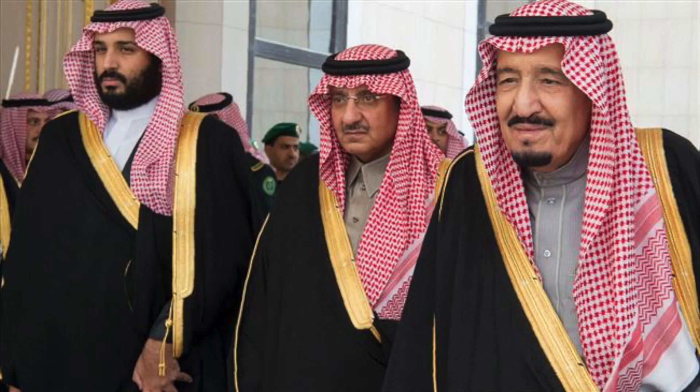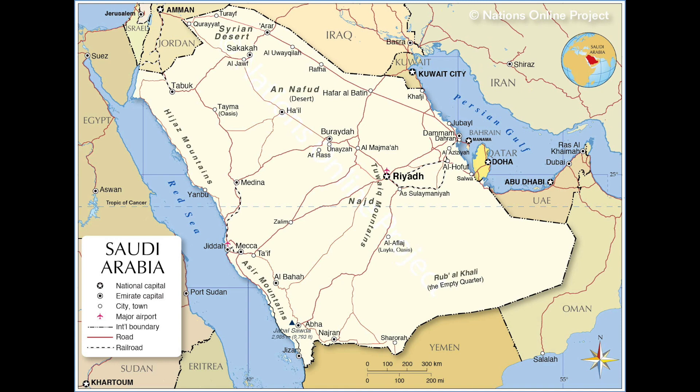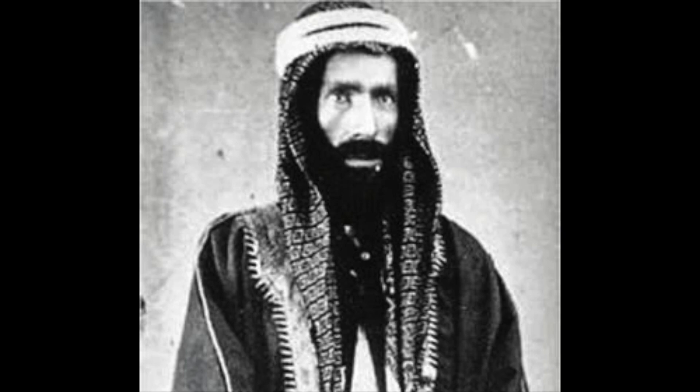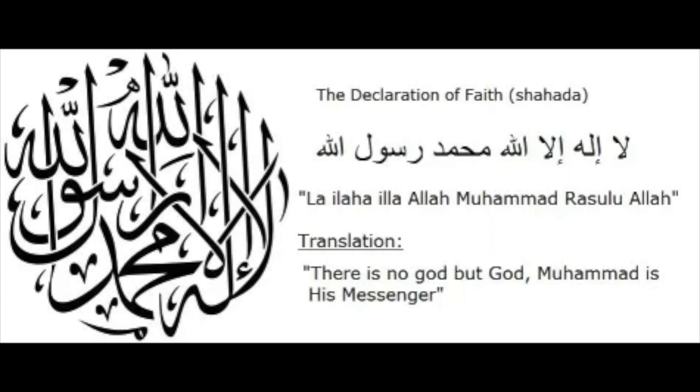The Al Saud family, which would go on to found the Kingdom of Saudi Arabia and still rules it today, have long been adherents to the ideology of Wahhabism. Wahhabism is a highly traditionalist and fundamentalist interpretation of Islam, founded by Muhammad ibn Abd al-Wahhab. His followers used the Islamic Declaration of Faith, known as the Shahada, on their flags.